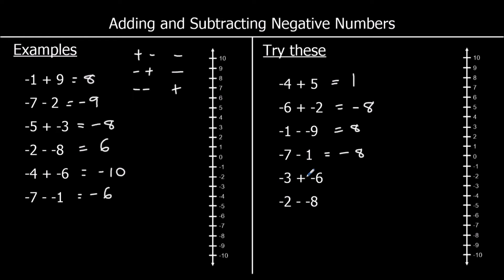Negative 3 plus negative 6 is the same as saying negative 3 minus 6. We start at negative 3, go down 6, which is negative 9. And finally, negative 2 minus a negative 8 — taking away a negative is the same as adding. So negative 2 plus 8 is 6.